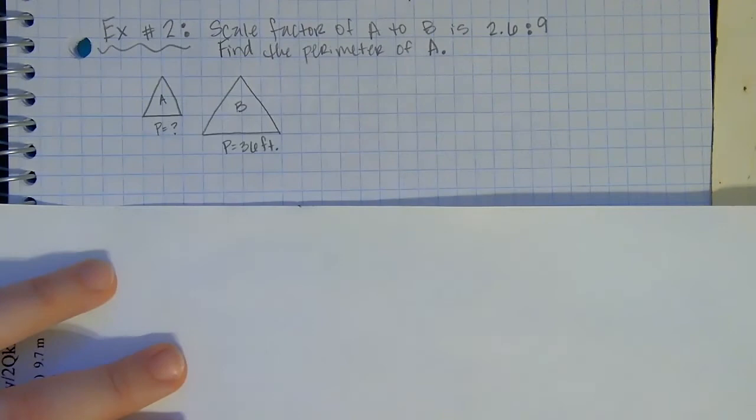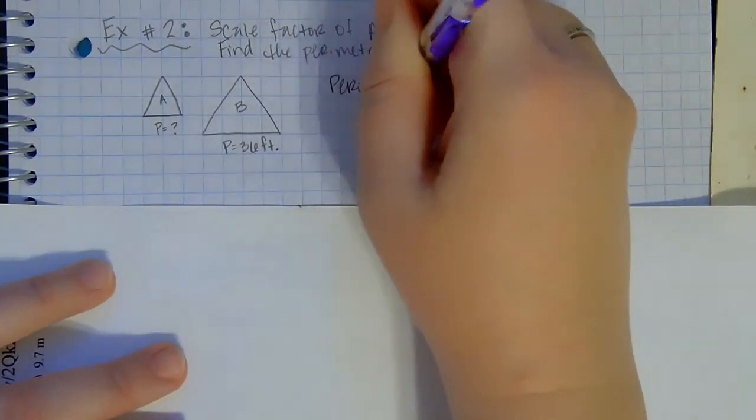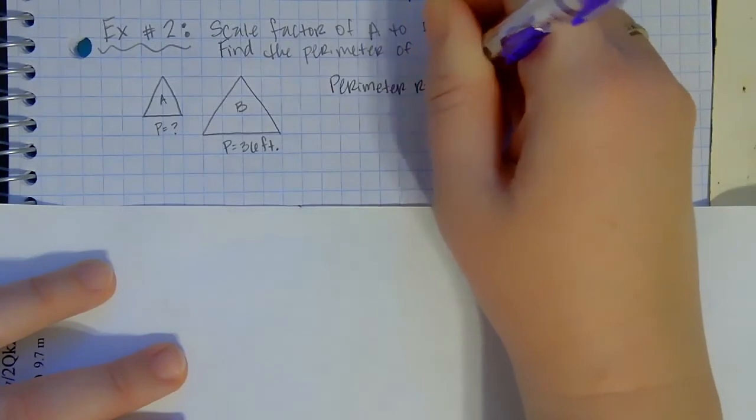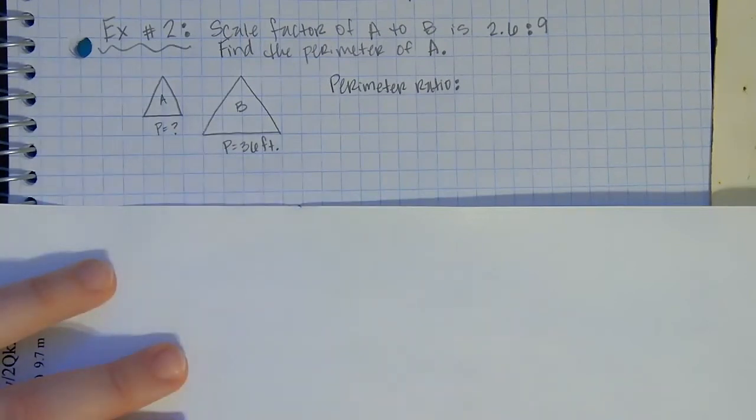The first thing I want to do is write down the perimeter ratio. Because I'm talking about perimeter, I need my ratio of my perimeters. Now based on what we learned above, we know the perimeter ratio is going to be exactly the same. I like to write it as fractions, it makes the work a lot easier.